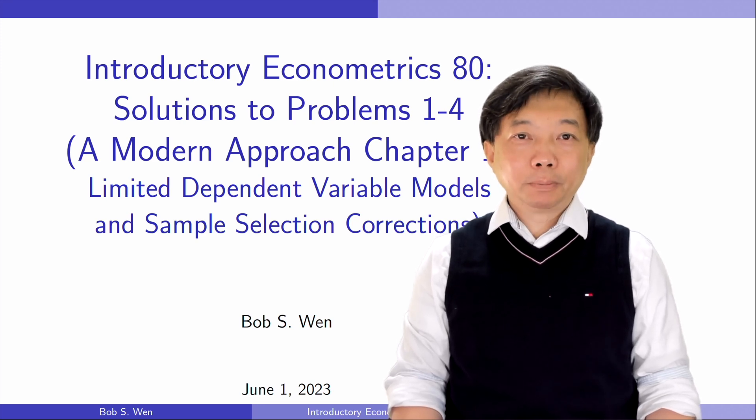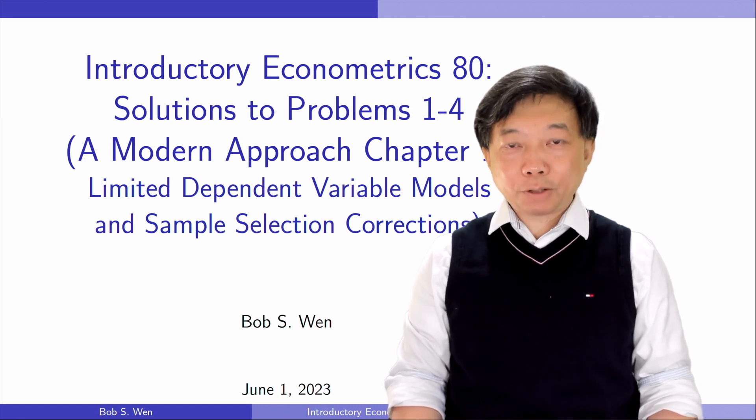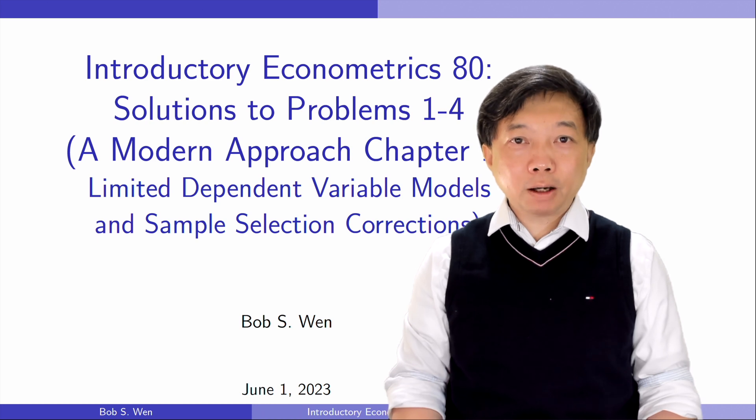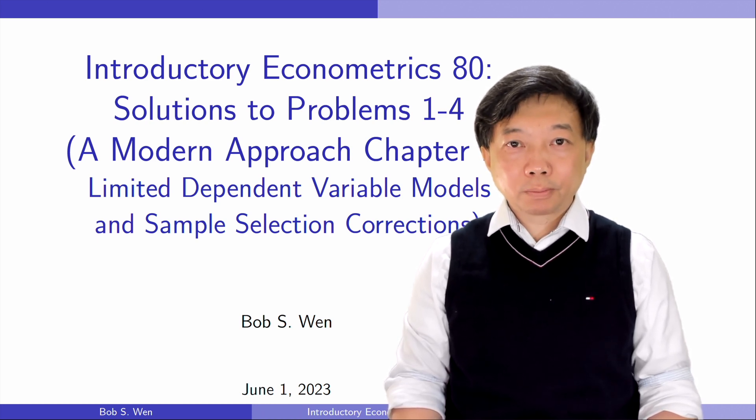Hi, I'm Bob. Good to see you in the introductory econometrics course. We will solve the problems for chapter 17, limited dependent variable models and sample selection corrections in the textbook Introductory Econometrics: A Modern Approach, the seventh edition by Professor Jeffrey Wooldridge.